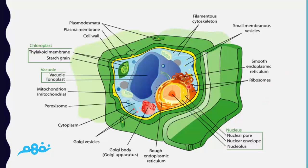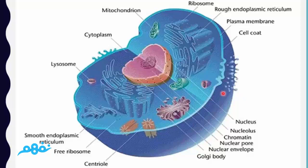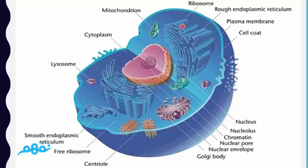These are the animal cell components, as found in human cells. This is the central Golgi body, the nuclear envelope, the nucleus, cytoplasm, lysosome, mitochondria, ribosomes, plasma membrane, and rough endoplasmic reticulum.